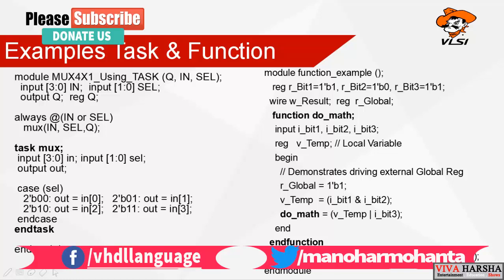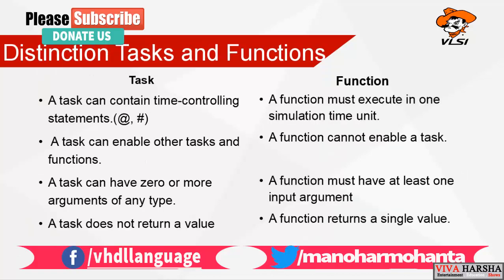These two examples should clarify the difference between a task and a function. To summarize the distinctions: a task can contain timing control statements (hash, @posedge) while a function executes in a single simulation time unit; a task can enable other tasks and functions while a function cannot; a task can have zero or more inputs or outputs while a function needs at least one input; a task does not return a value while a function returns a single value.